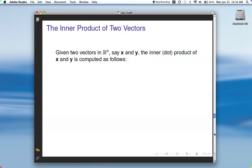We're going to look at one other way to compute A times X, but first, we're looking at the inner product of two vectors, because we're going to use that. So, if we're given two vectors in R M, say X and Y, then the inner product, which is also called the dot product of X and Y, is computed as follows.